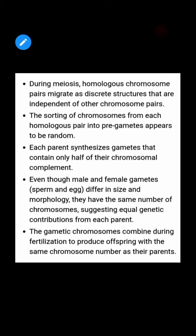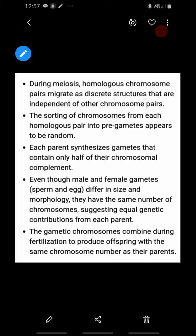The next point is that the segregation and sorting of chromosomes from homologous pairs into pre-gametes appears to be random — any chromosome from a homologous pair can go to any gamete. Additionally, each parent synthesizes gametes that contain only half of their chromosome complement, since from each homologous pair only one chromosome goes into a gamete.